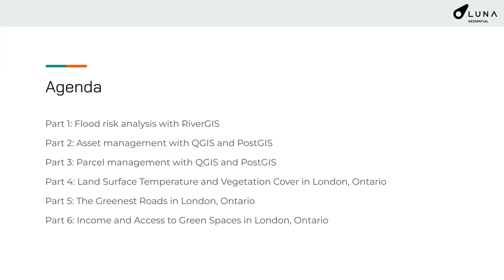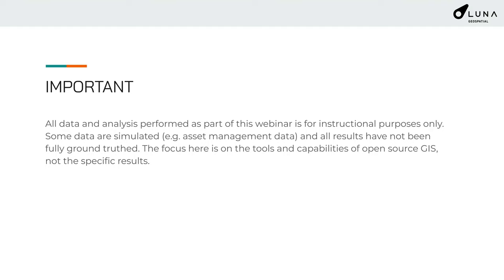Something important to mention: all data analysis performed as part of this webinar is for instructional purposes only. Some data are simulated — for example, the asset management data. I don't have that level of detail for all data sets available through the Open London website. All results have not been fully ground-truthed. This isn't about scientific rigor; the focus is on the tools and capabilities of open-source GIS, not the specific results.